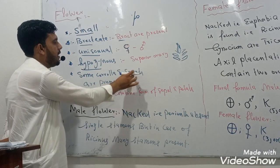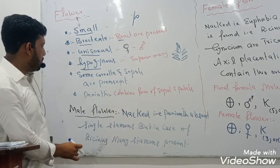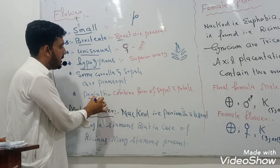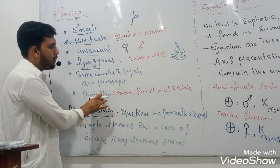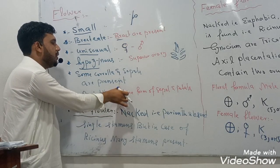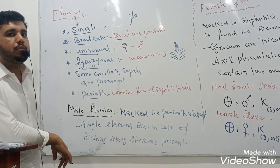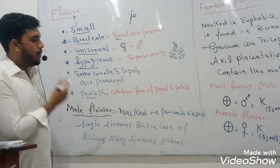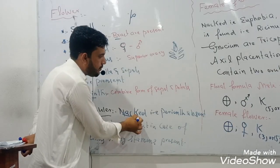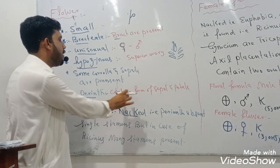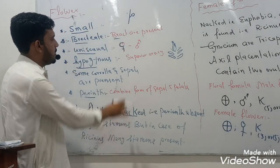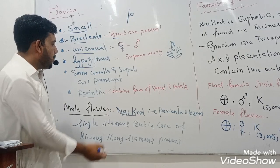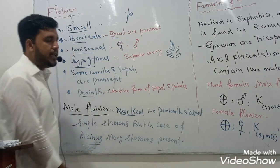In some cases the corolla and calyx — the colored leaves and green leaves — are present clearly, while in some cases they are in perianth form. Perianth is the combined form of petals and calyx in which petals and calyx are not clearly differentiated. The male flower is naked, meaning perianth is absent. A single stamen is found in many flowers, but in the case of Ricinus, there are many stamens present.